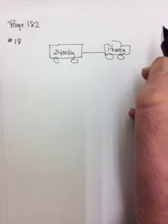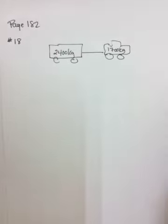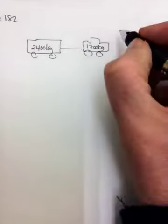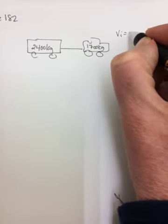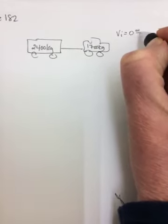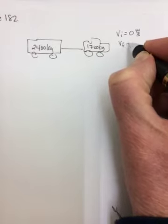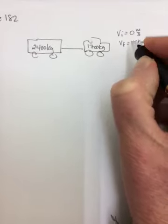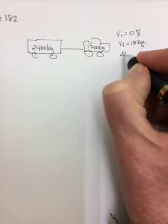The two vehicles accelerate uniformly from a stoplight, reaching a speed of 15 kilometers per hour in 11 seconds. So from a stoplight means VI is zero, reaching a speed of 15 kilometers per hour VF, in 11 seconds, delta T.